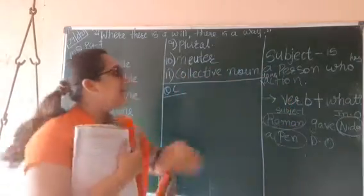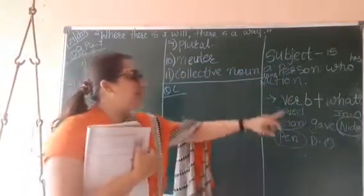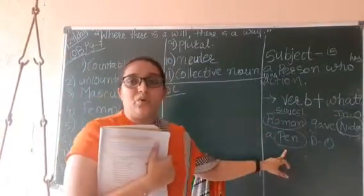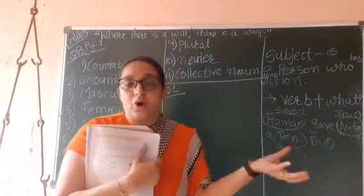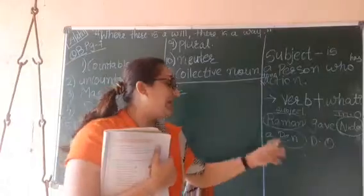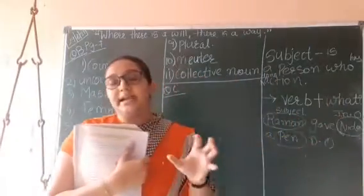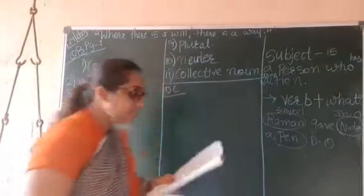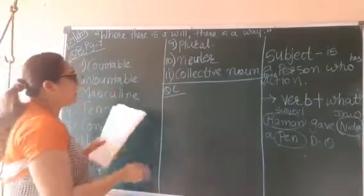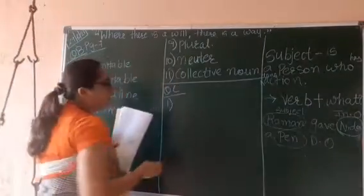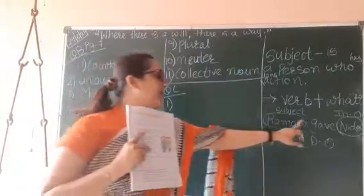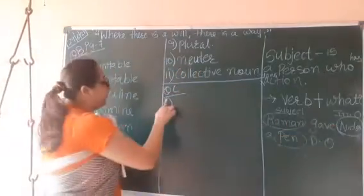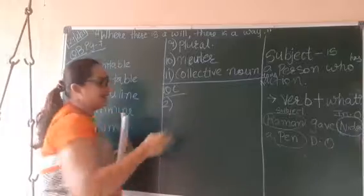Direct object is verb plus what — what that person got. Indirect object means the receiver. The first sentence, Raman gave Nida a pen, is now completed. We will start with the second one.